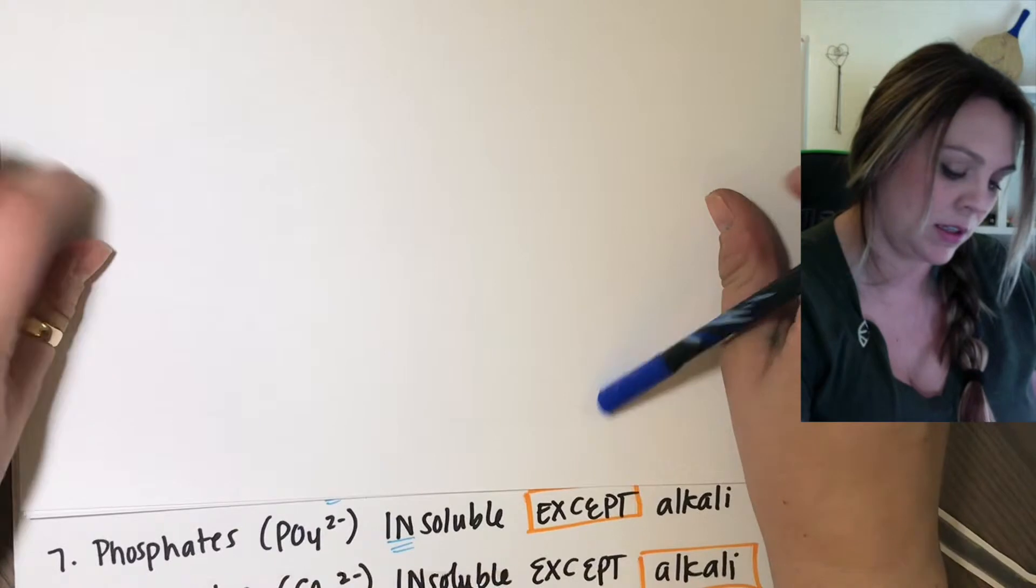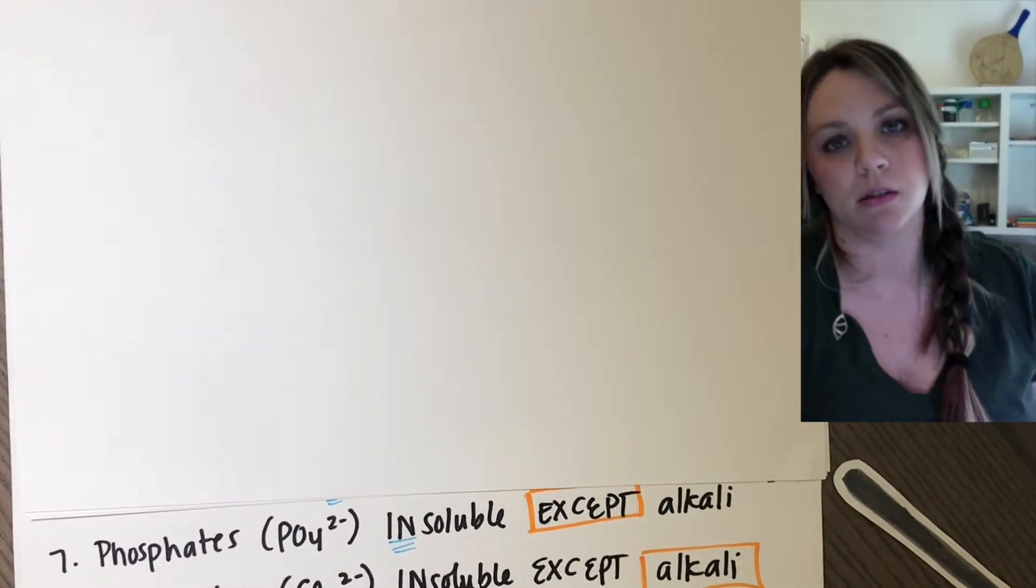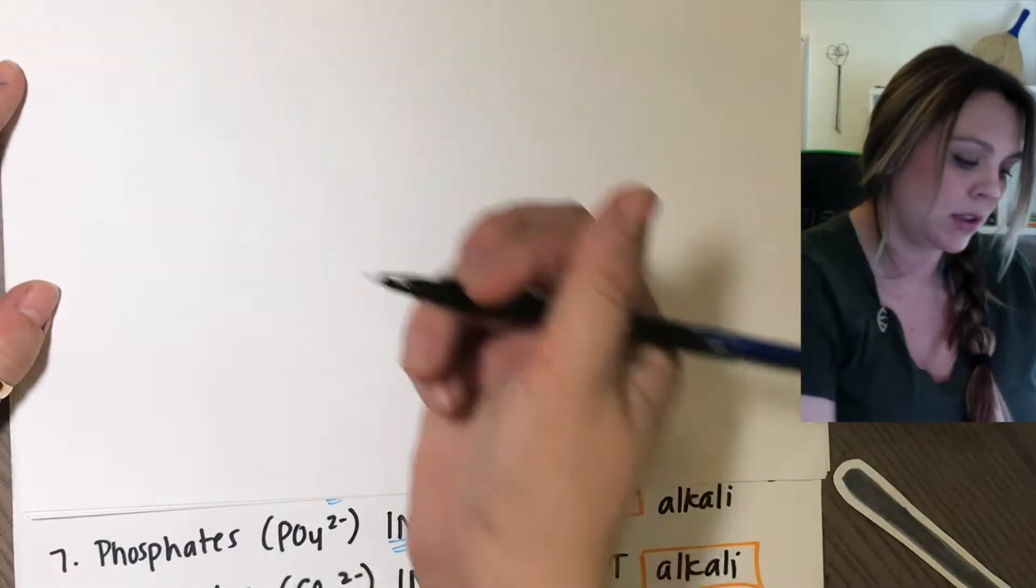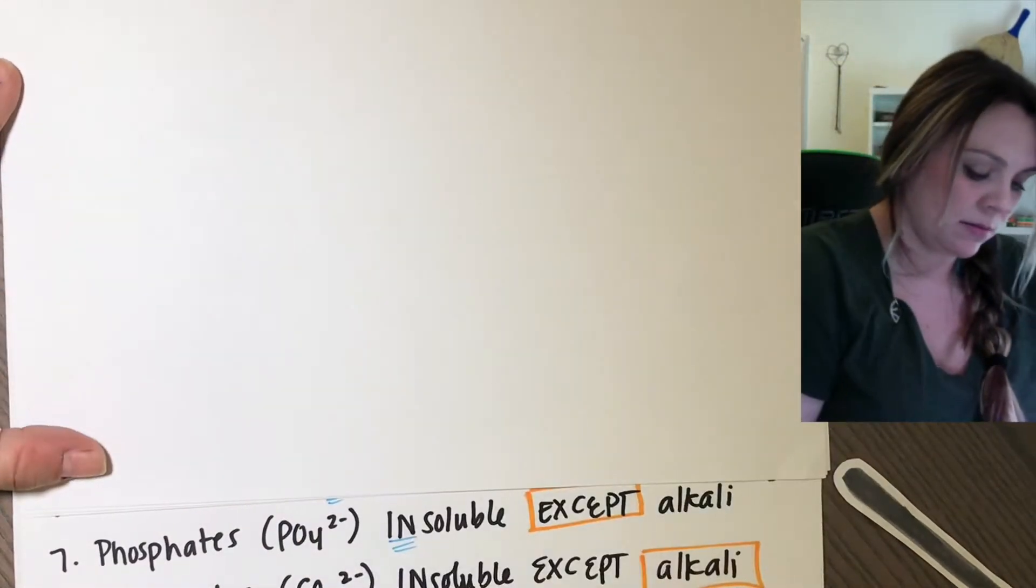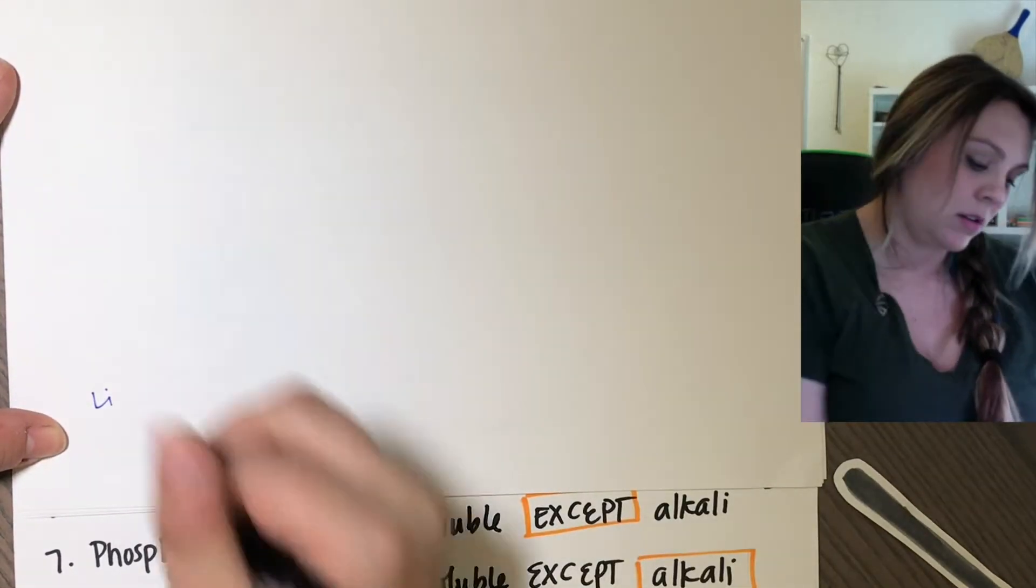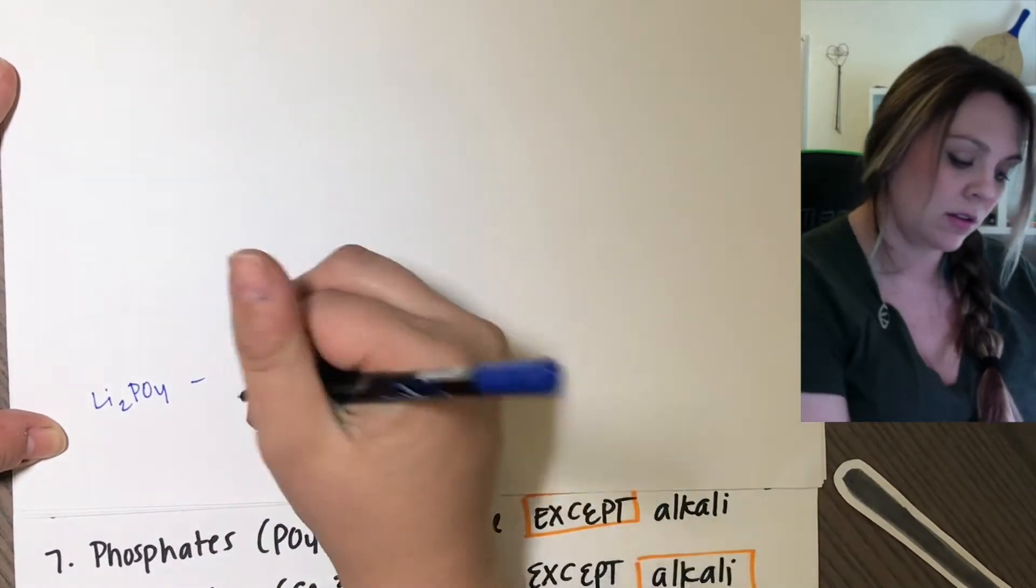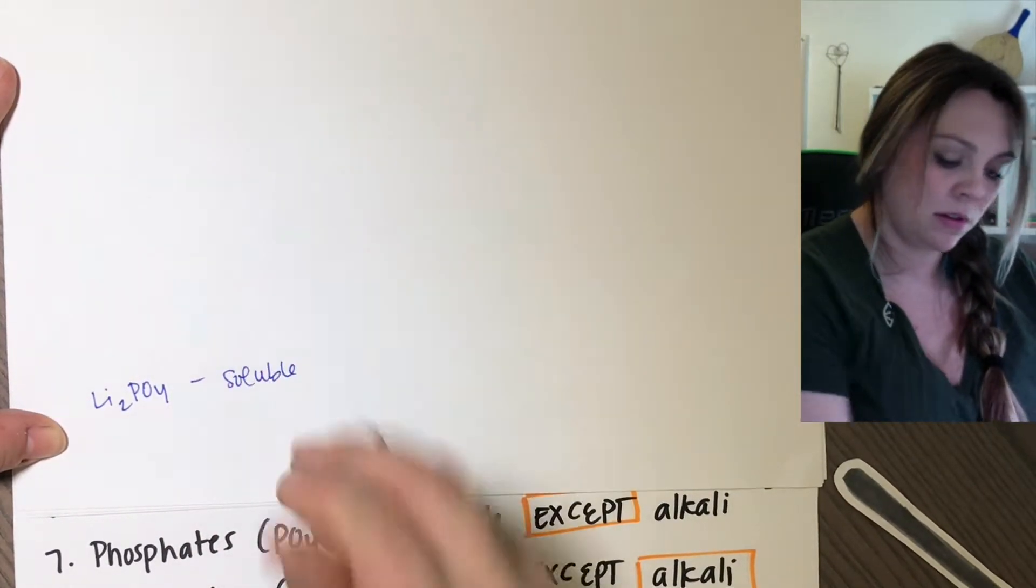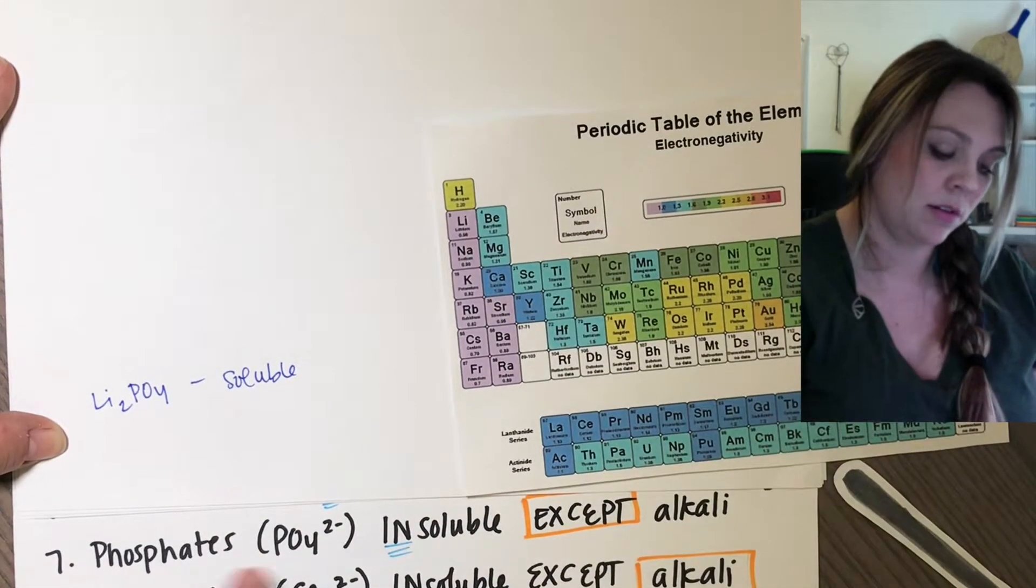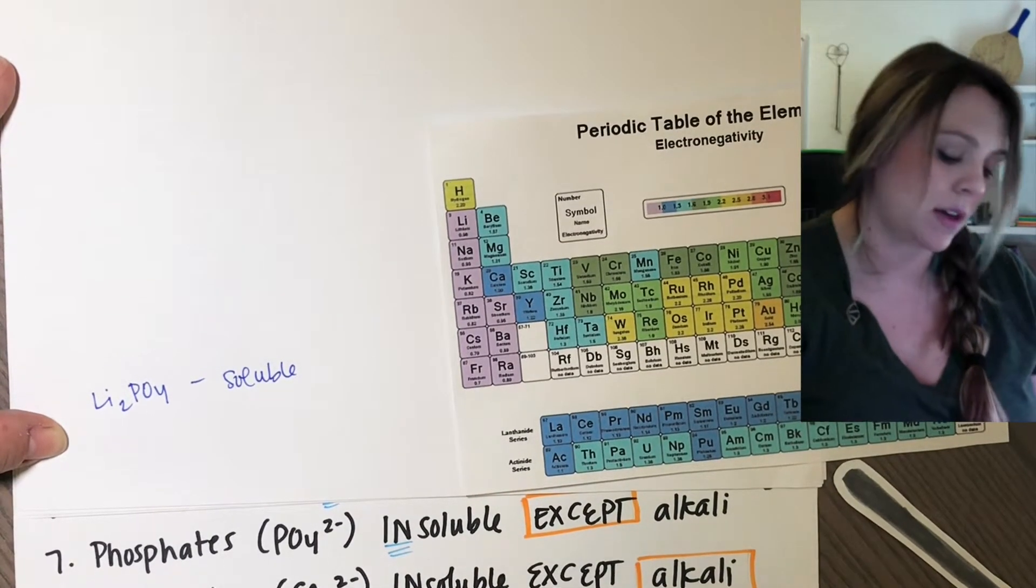Two more. I'm going to actually have to move up top. So phosphates are insoluble unless they're bonded to an alkali metal. So it doesn't matter. So lithium phosphate, this would be soluble because lithium is an alkali metal. Phosphates are insoluble unless bonded to an alkali metal. You guys got this.